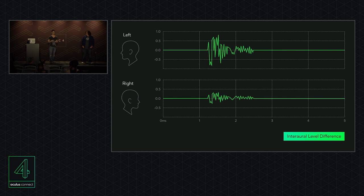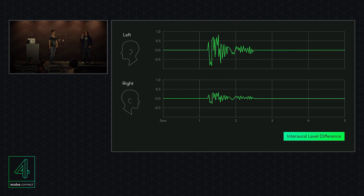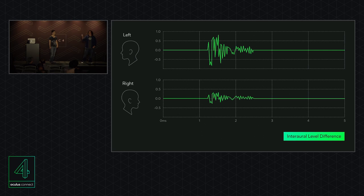This was super helpful when we made Farlands. We spatialized every single thing in that game, and we realized that the talking robot at some point didn't sound quite right — it turns out it was only panning. Pete showed me this trick and it's been super helpful in debugging things that somehow missed the 3D spatialized panner. That's how the levels work in spatial audio.